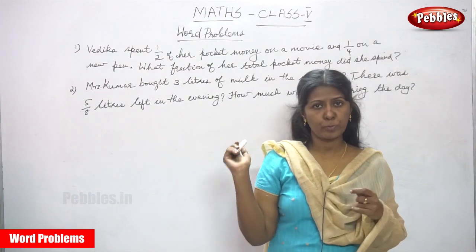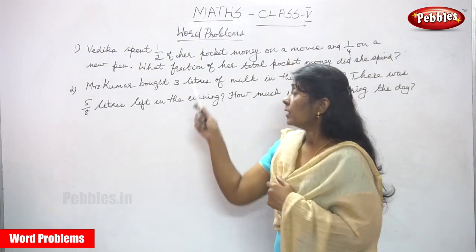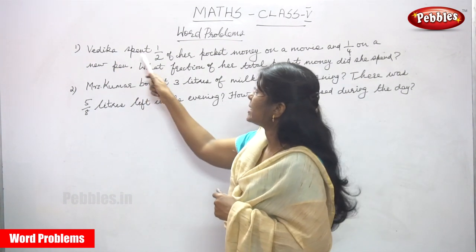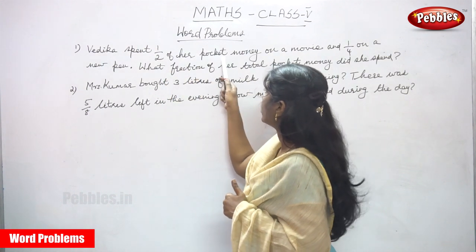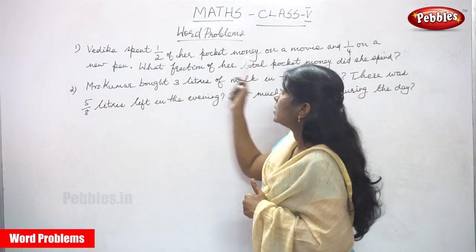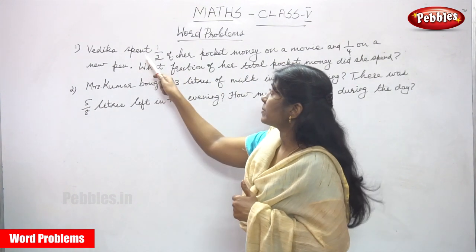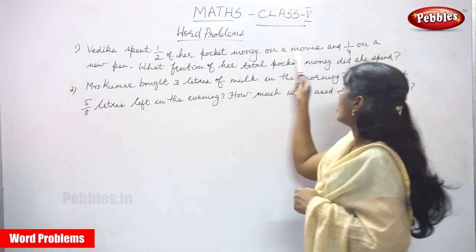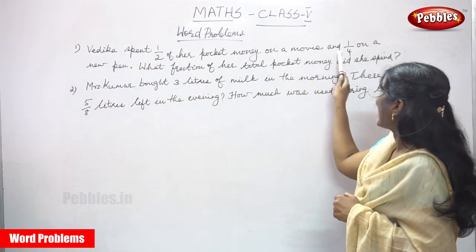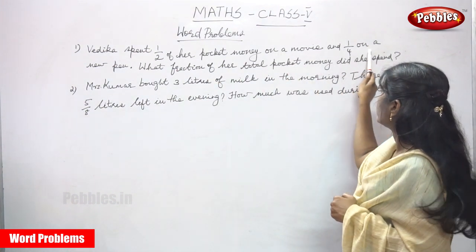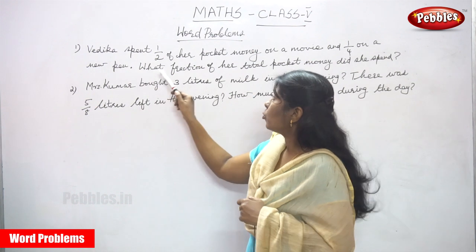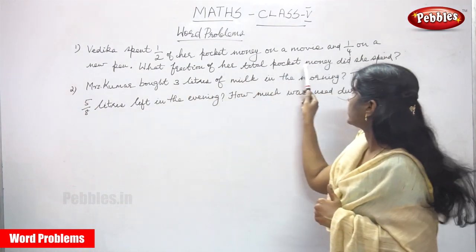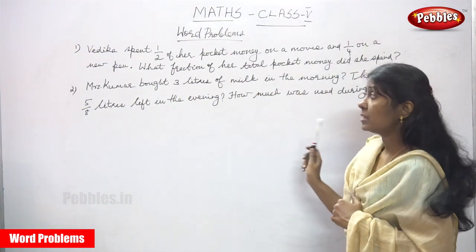Now we are going to see word problems. Vedika spent 1 by 2 of her pocket money on a movie and 1 by 4 on a new pen. What fraction of a total pocket money did she spend?